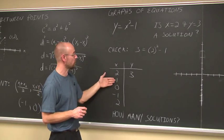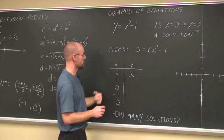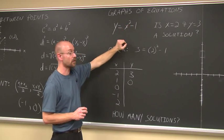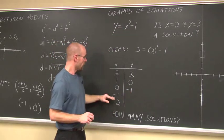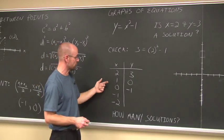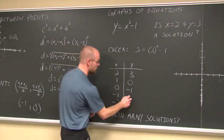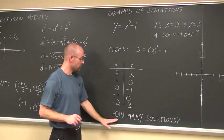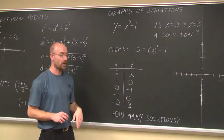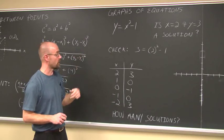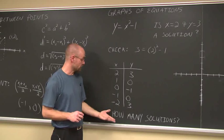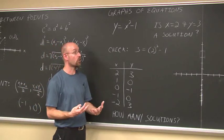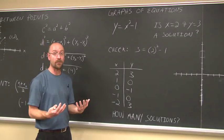Continuing the table: when x = 1, y = 1² - 1 = 0; when x = 0, y = 0 - 1 = -1; when x = -1, y = 0; when x = -2, y = (-2)² - 1 = 3. If we continue in both positive and negative directions, we keep finding y values — this equation has infinite solutions. One way to describe an equation with infinite solutions is by graphing it on a Cartesian coordinate system.